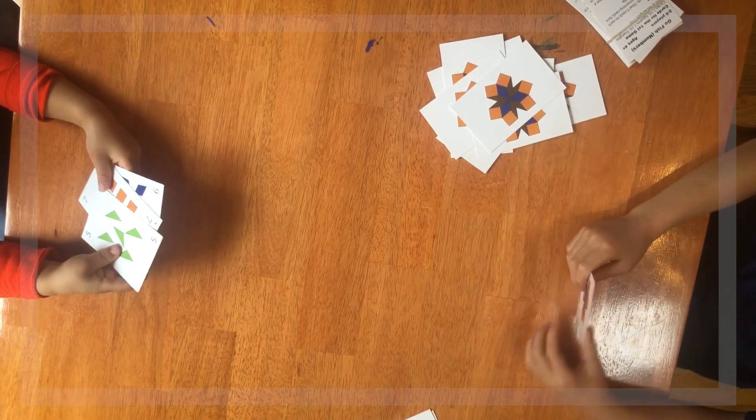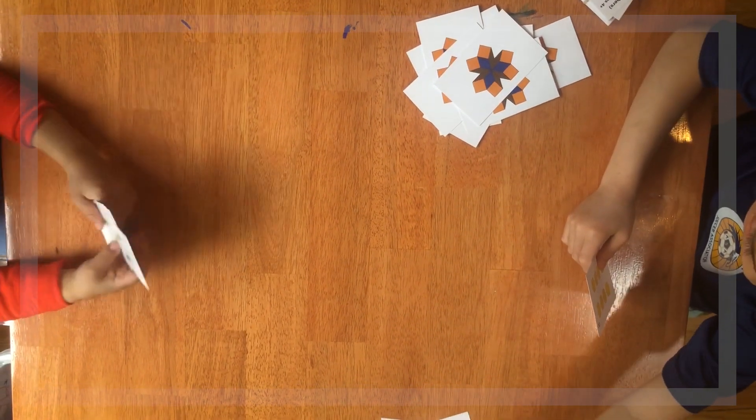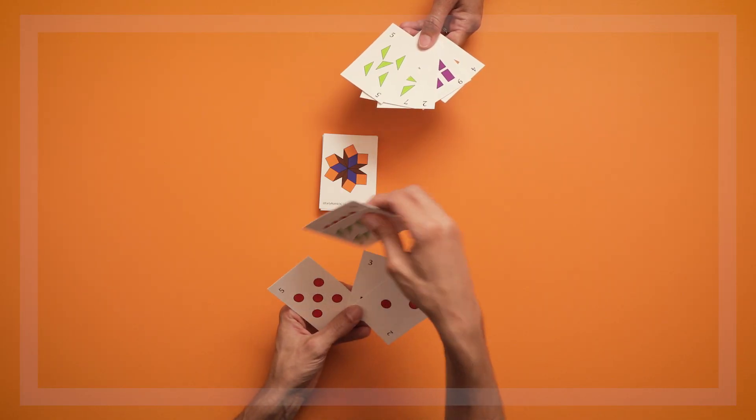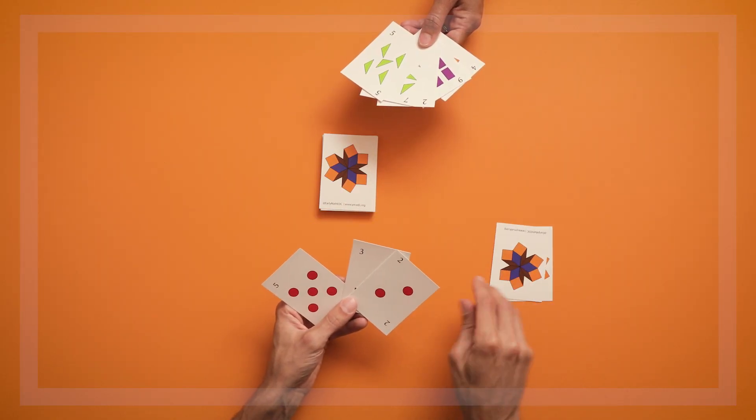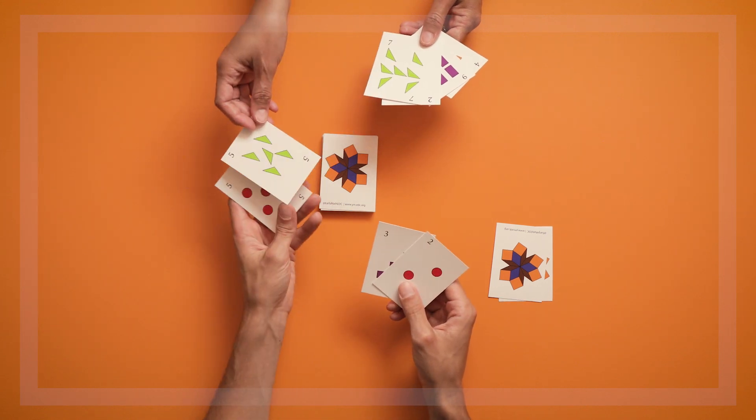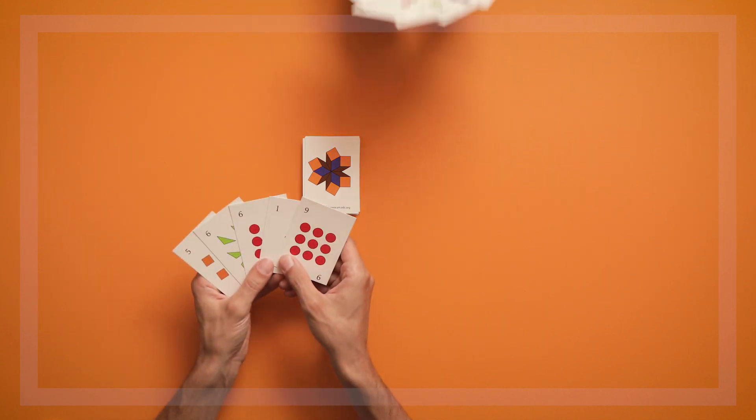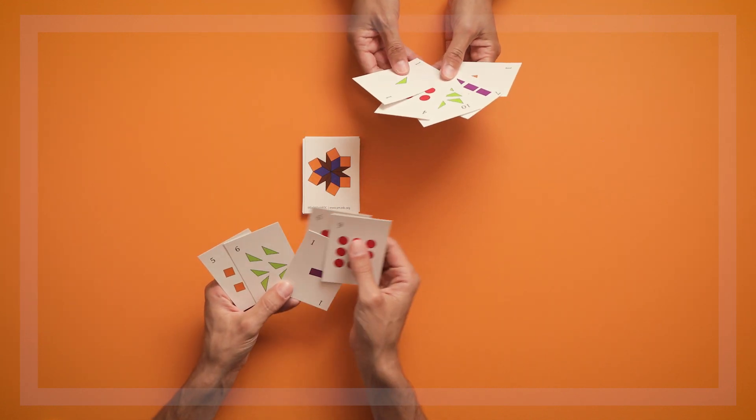There are lots of ways to play Go Fish, so feel free to play the way you like best. But in this video, we're going to show you two ways to play with the shape cards. The first way to play is by trying to match pairs of cards based on the numbers on the cards. And the second way is to play by trying to match the shapes on the cards.